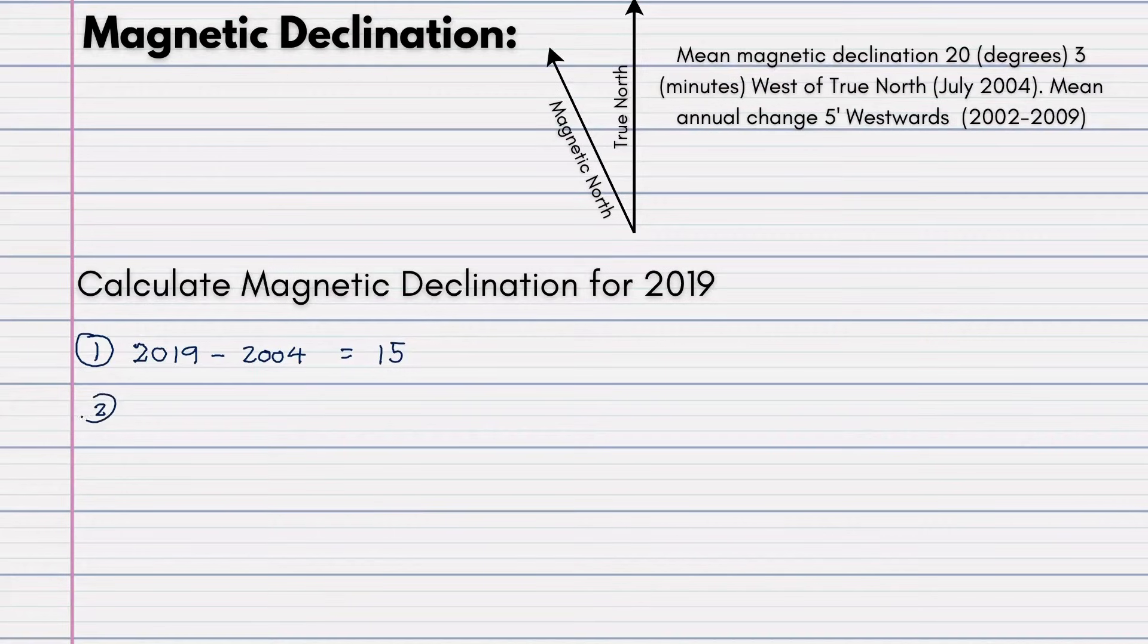For number 2, what we will have to do is, we will take your 5. Here we can see your mean annual change is 5 minutes westwards. So you just take the 5. Remember, the minutes will have the inverted comma. And we will multiply that by your 15 years. And that will give us your total change, which would be 75.